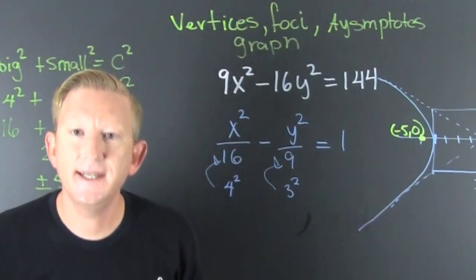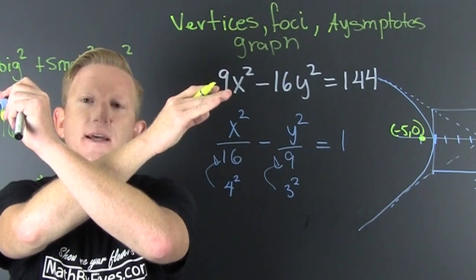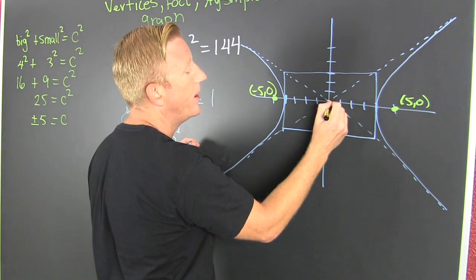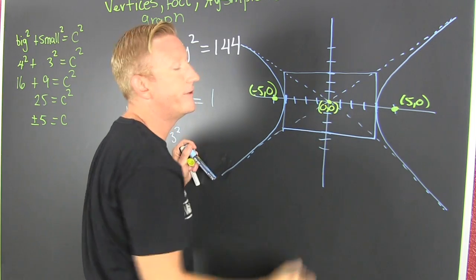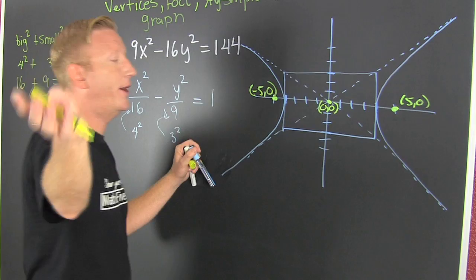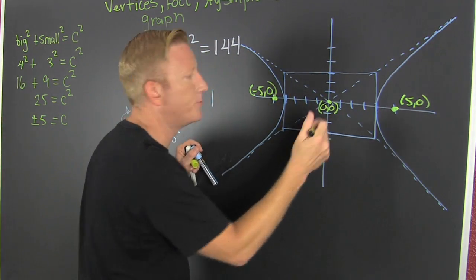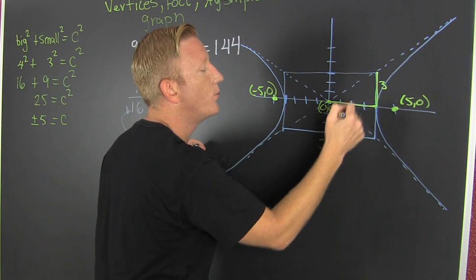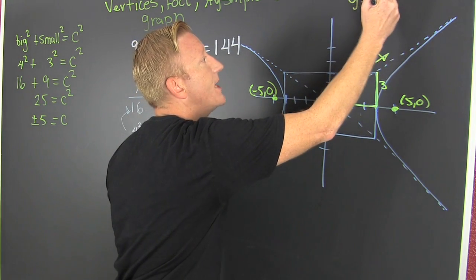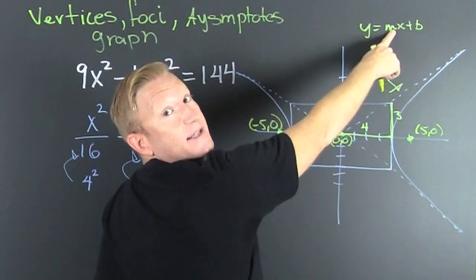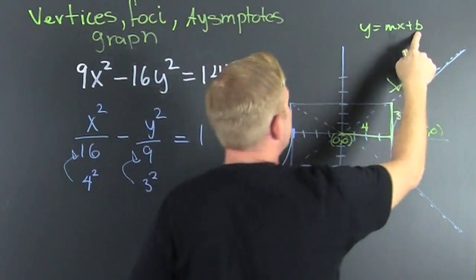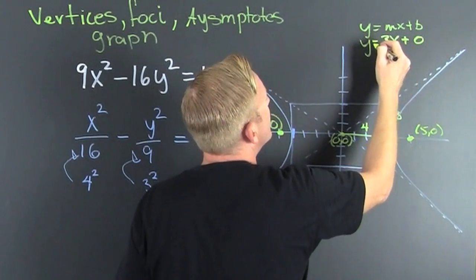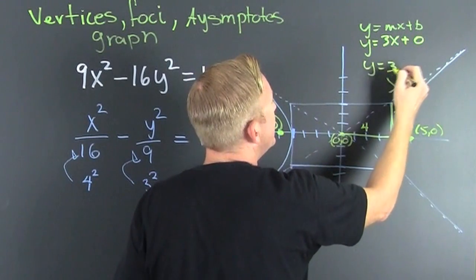Now, what else do we need to do? We need to get the equation of the asymptotes that define our box. For the equation of a line, we need a point and a slope. Both of these asymptotes share a common point — the origin. The slope is rise over run: it rises 3 units and runs 4 units. So the equation of this line is y equals 3 fourths x.